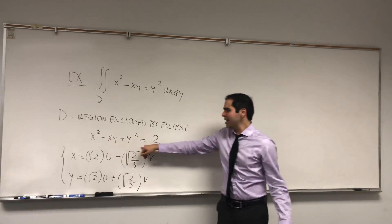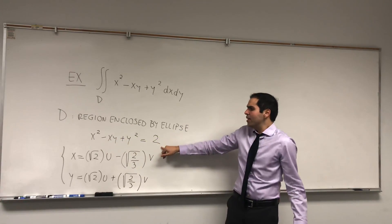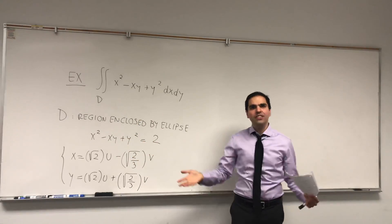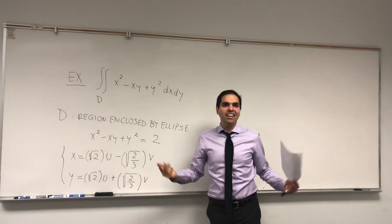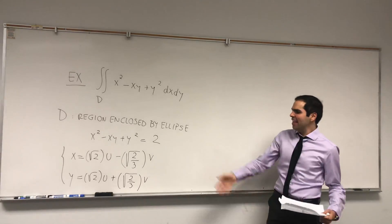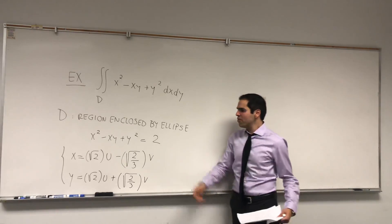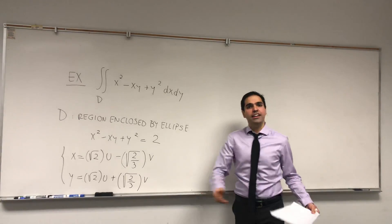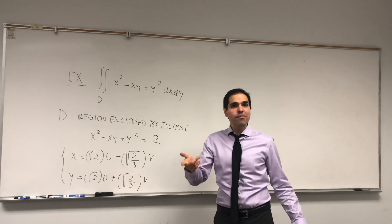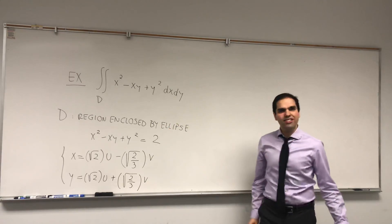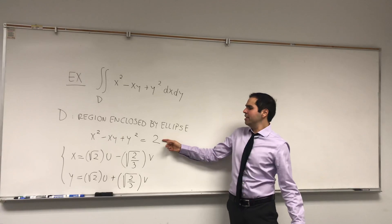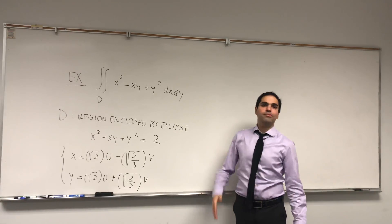Namely, you write this ellipse in terms of matrices, you diagonalize that matrix, and then that would give you the variables. If you're curious, there's a similar video that I'll put in my description to give you an idea of how to do that.